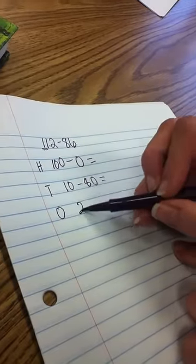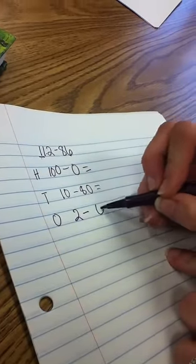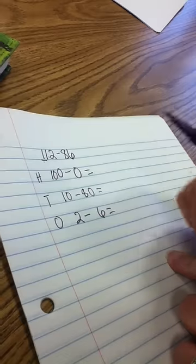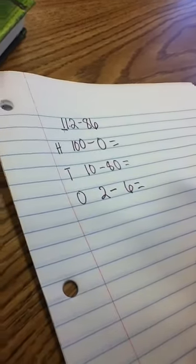Then it's going to be 2 minus 6. So the first thing they've done is set up their problem. Now they're going to subtract.